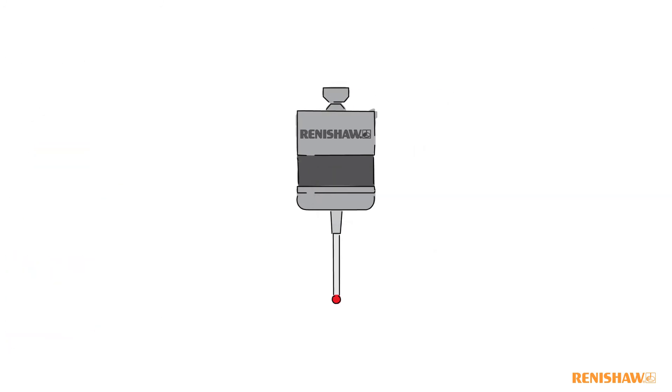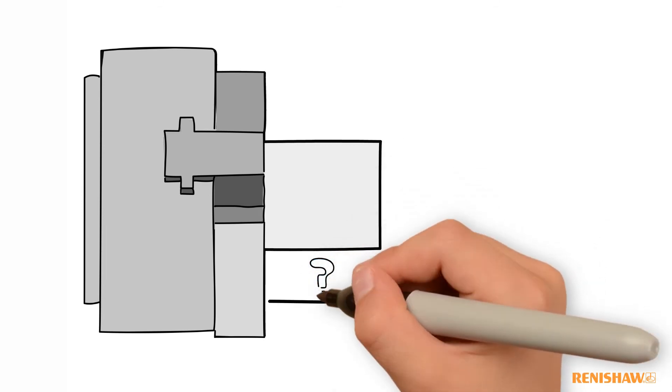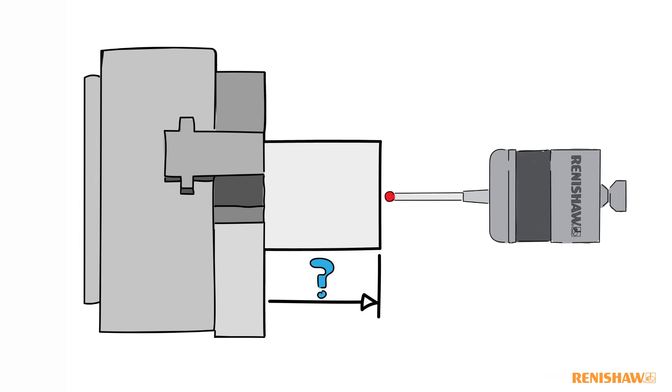Now we use the Renishaw probing system to locate our parts. Using the same example, the probe is able to accurately locate the material, enabling the control to automatically set the work offset and update the toolpath.